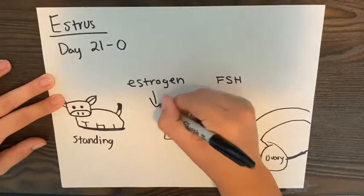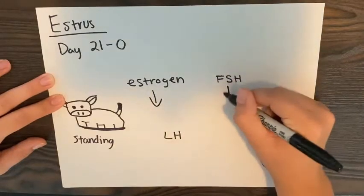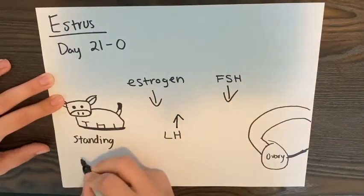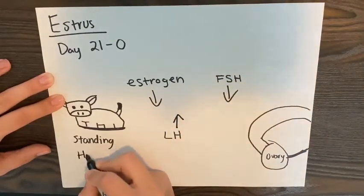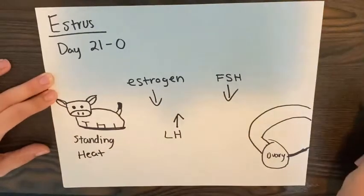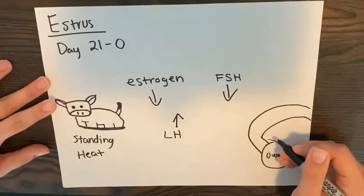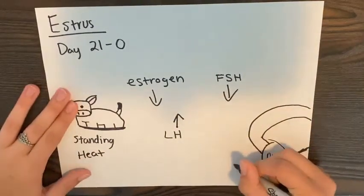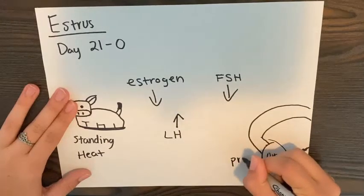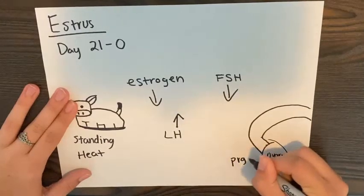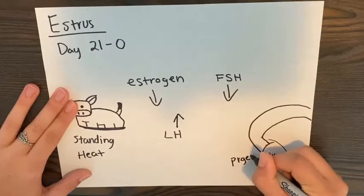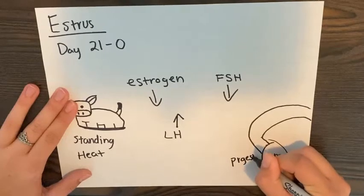During estrus, the estrogen and FSH are declining. LH peaks during standing estrus. This is the time the cow is in standing heat and will stand with all four legs firmly braced to be mounted by another cow. Estrus lasts 18 to 24 hours, but may be shorter.